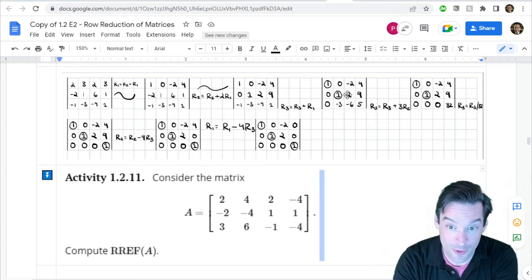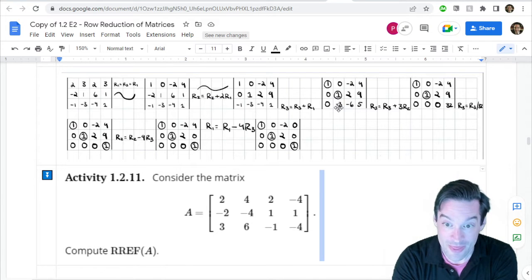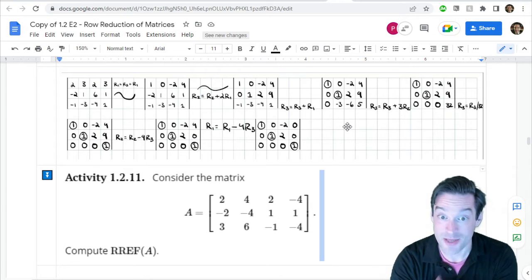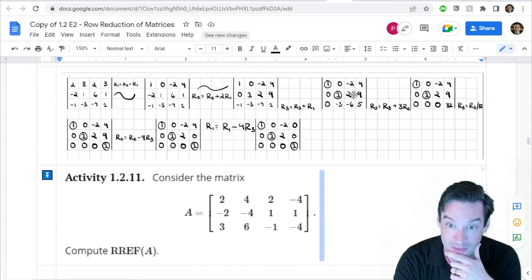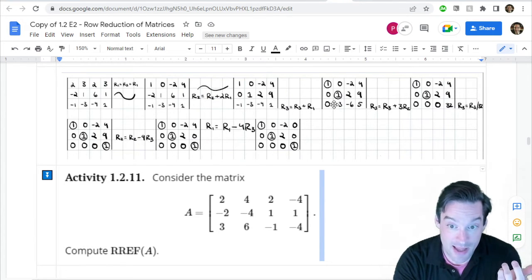Because when you look at those entries, right, one, two in the second row, negative three, negative six in the third row, those two entries in the third row are just negative three times both of the corresponding entries in the second row, right? They stand in a two-to-one ratio here and a two-to-one ratio there. And so we can't cancel out this entry without also canceling out the entry next to it.